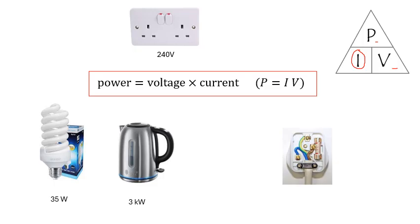One thing you may have to use this equation to do, and it says it in the specification, is figure out the value of the fuse in the plug. There's the fuse there. Basically what the fuse is supposed to do is it breaks the circuit if the current is too big. So what you might have to do is work out the current, the normal current, and then from that figure out what fuse should be in the plug.